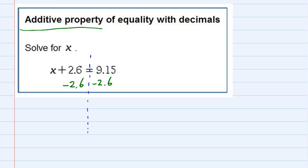Because on the left-hand side, 2.6 minus 2.6, those two cancel, leaving me with just our x.